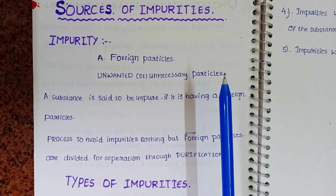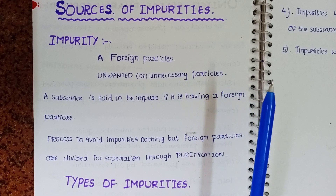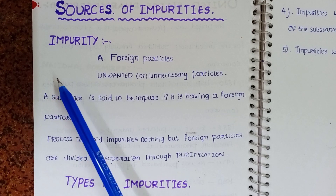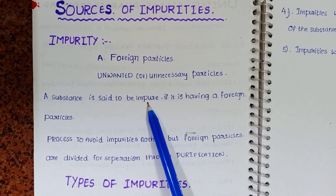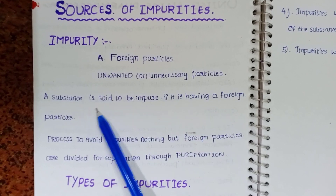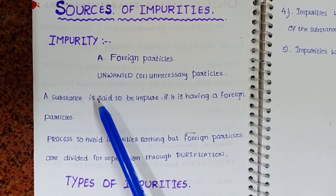So if we look at chemical reactions, an impurity is something that is unnecessary and extra in the reaction. We know that impurity is not only something of a toxic nature. A substance is also said to be impure if it is having a foreign particle, and this is also part of the definition of an impurity.